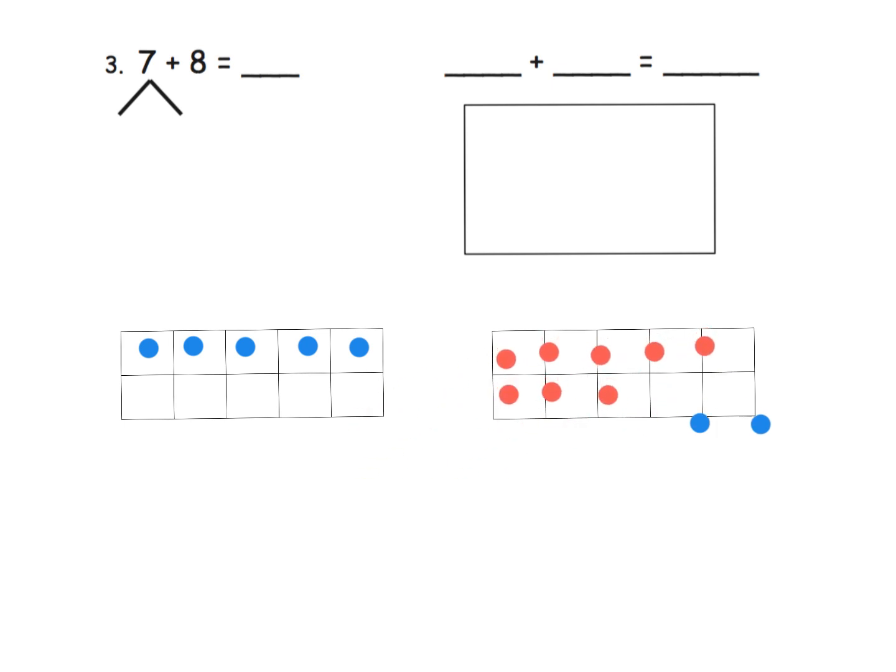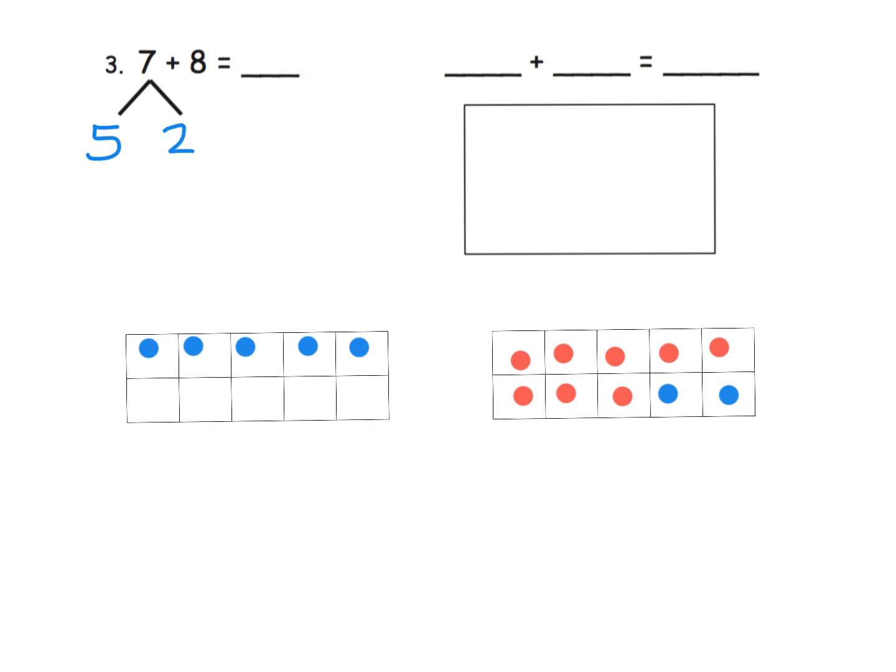So we end up with 5 plus 10. How did we get that? When we moved these two over to here, we turned the 7 into a 5 plus a 2, and then that created our 10. We end up with 5 plus 10, which is of course 15. So that means 7 plus 8 is 15. We can see that right here. We know 8 needs 2 more to make 10, so we decompose the 7 to be 5 plus 2. Now we have 5 plus 10, and of course that's 15.